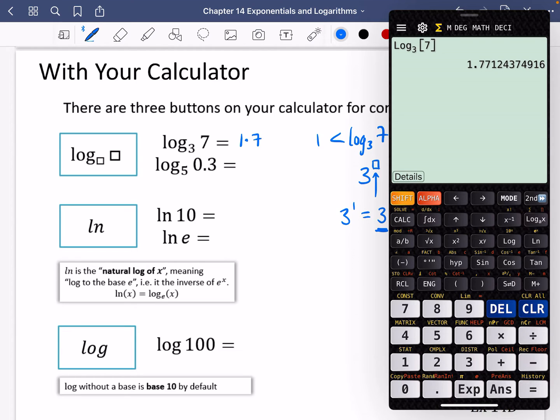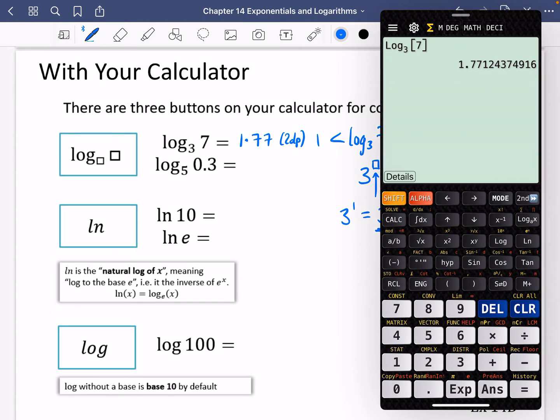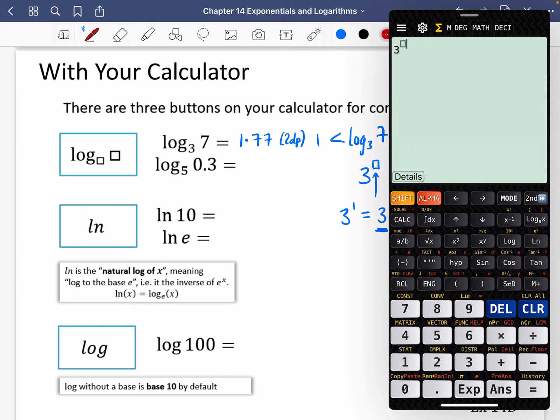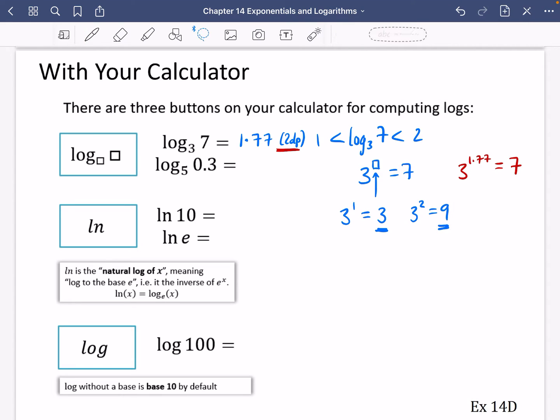So the answer is 1.77, and I've done that to two decimal places. So this is actually saying that 3 to the power of 1.77 is going to be equal to 7. But let's test if that's true. Let's do 3 to the power of 1.77. Well, it doesn't give exactly 7, it gives very close. The reason it gives very close is because I rounded it.